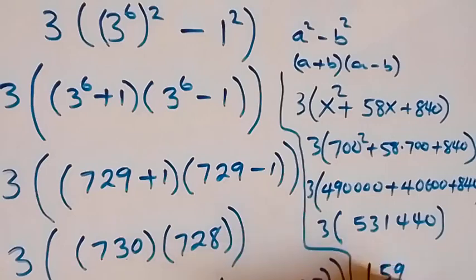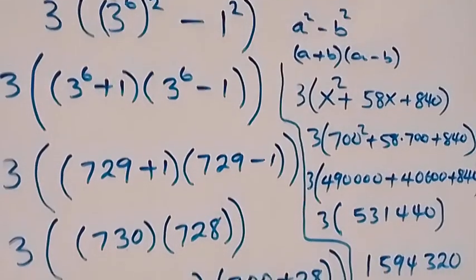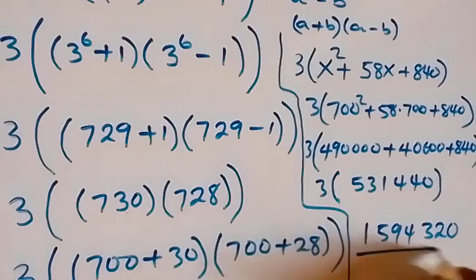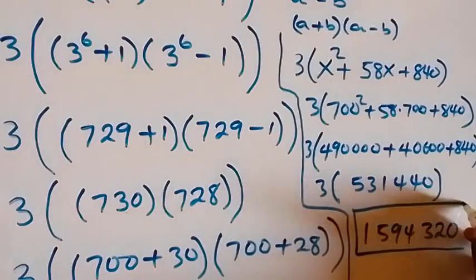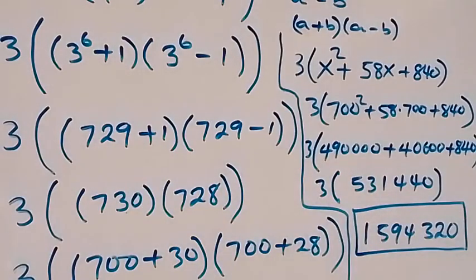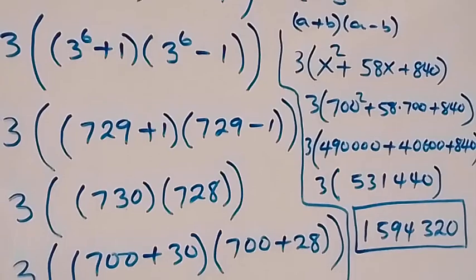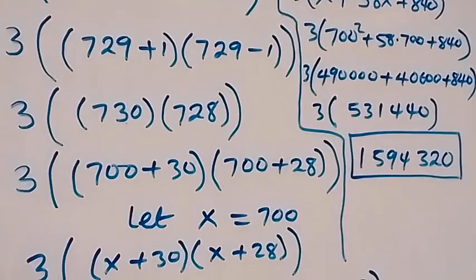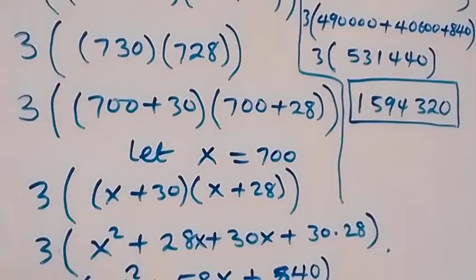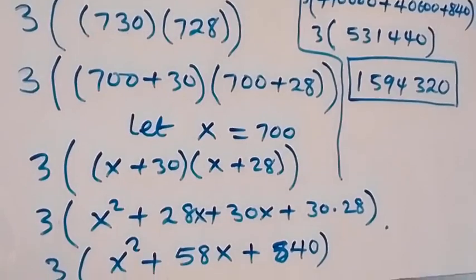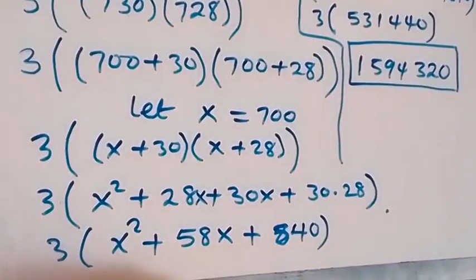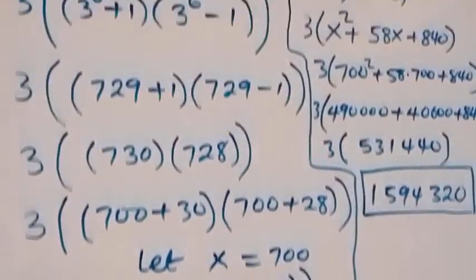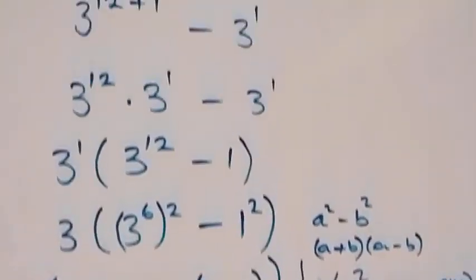So here we have the solution: 3 raised to power 13 minus 3 equals 1,594,320. Thank you for watching. Don't forget to subscribe for more exciting videos and turn on the notification bell, share this video, give it a thumbs up, and put your comment in the comment section.